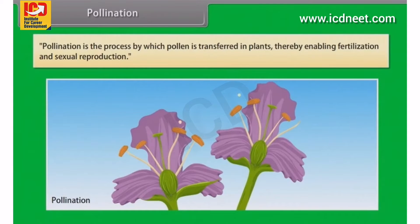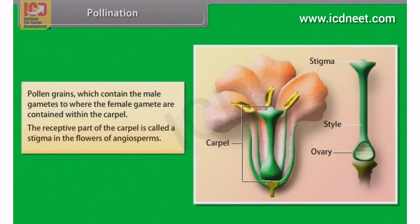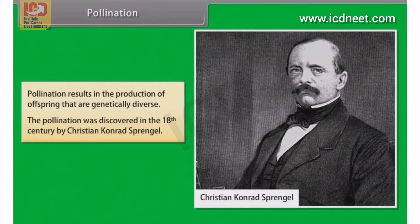Pollination is the process by which pollen is transferred in plants, thereby enabling fertilization and sexual reproduction. Pollen grains contain the male gametes and are transferred to where the female gametes are contained within the carpel. The receptive part of the carpel is called a stigma in the flowers of angiosperms. Pollination results in the production of offspring that are genetically diverse. Pollination was discovered in the 18th century by Christian Conrad Sprengel.